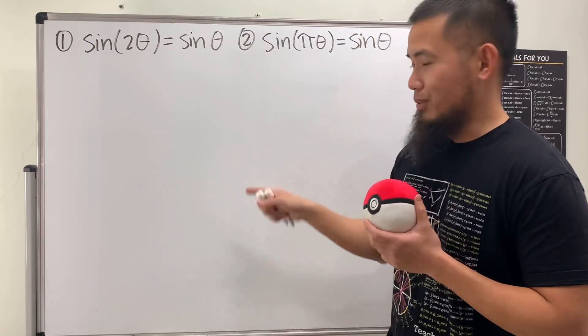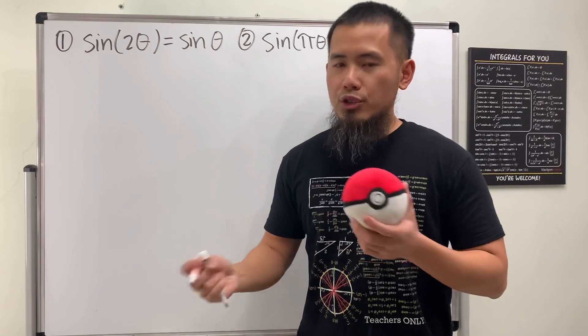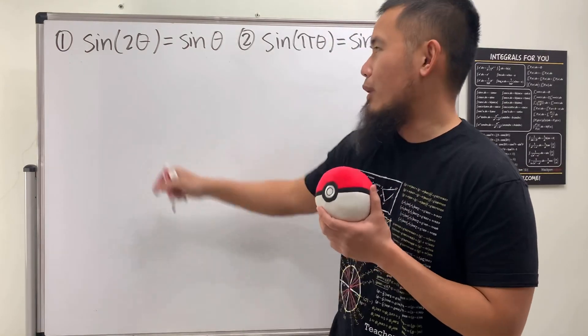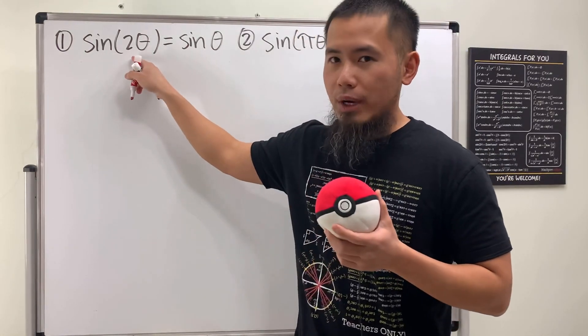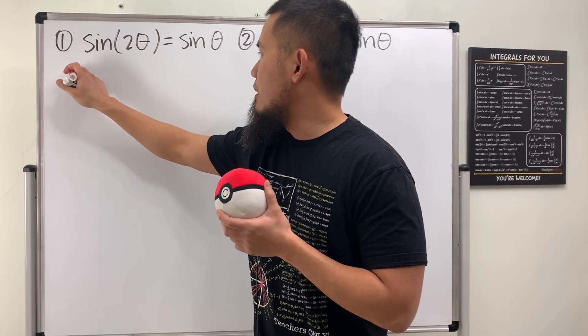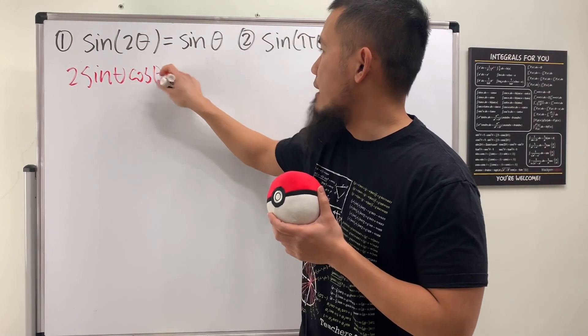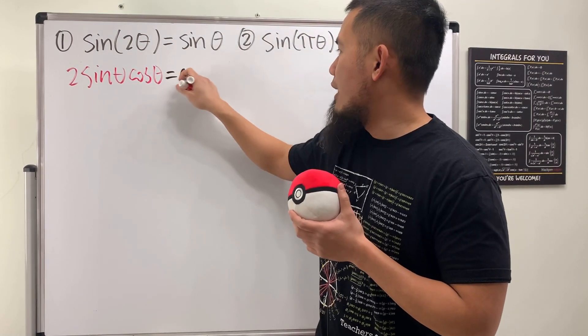All right, cool. I really believe you guys really tried it. So for the first one, I will actually show you guys the traditional way, which I will actually use the double-angle identity for sine. So we have sine of 2 theta. This is going to be 2 sine theta times cosine theta. And the right hand side, we will have sine theta.